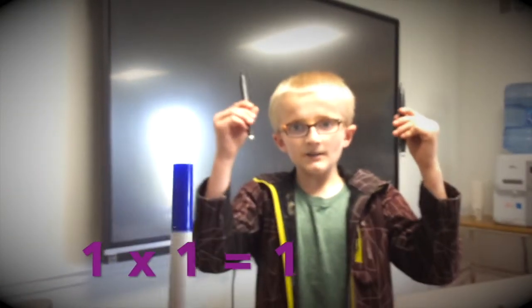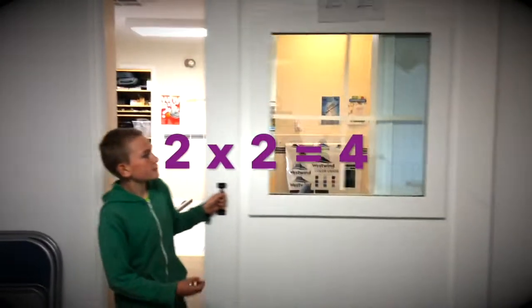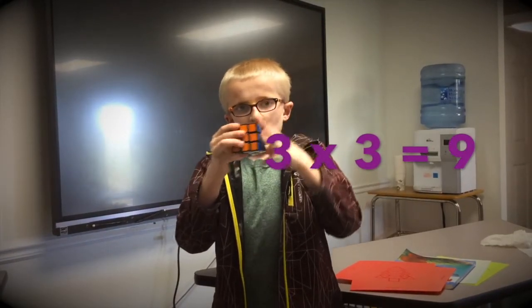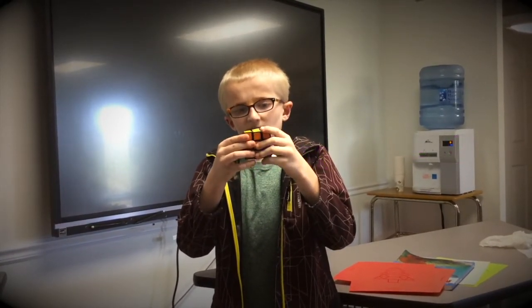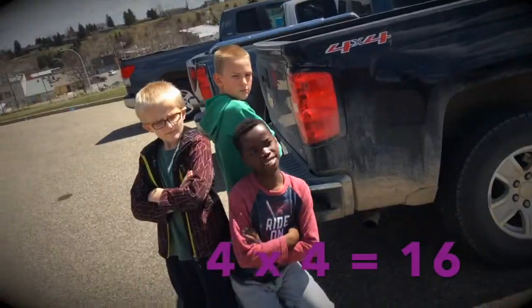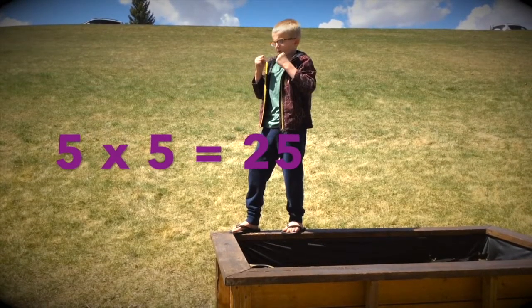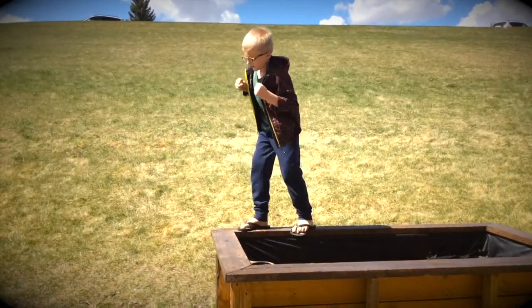One times one is one. Two times two is four. Three times three is nine. I'm doing Rubik's cubes all the time. Four times four is sixteen. Five times five is twenty-five.